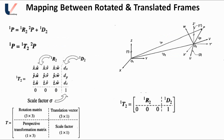The next topic is the combination of rotated and translated frames. In the rotated and translated case, 1P can be written as 1R2 · 2P + 1D2. This can also be written as 1P = 1T2 · 2P, where 1T2 is the homogeneous transformation matrix obtained by the combination of the rotation and translation matrix. This 1T2 can be represented as a combination of the rotation matrix, translation matrix, scale factor, and perspective transformation matrix.